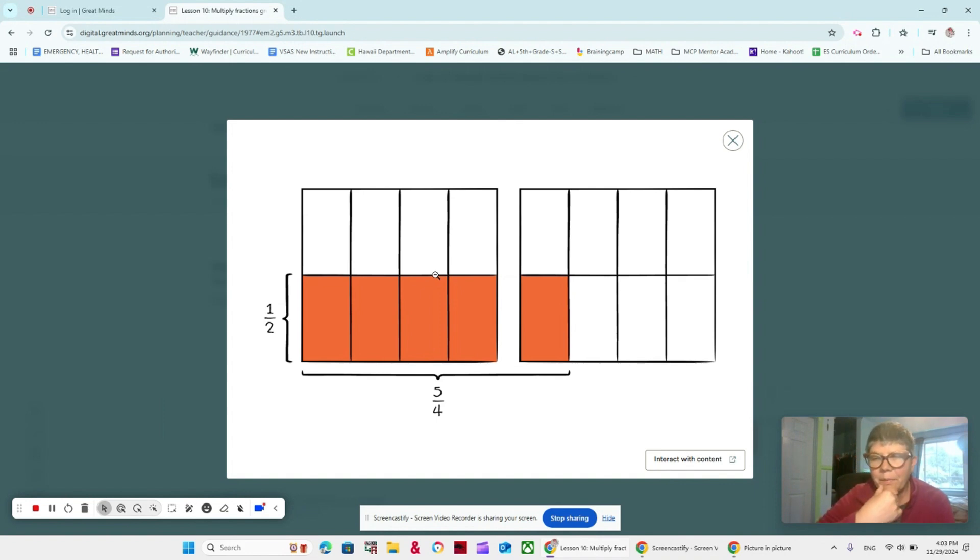This is the model that Leo is using to find 1 half times 5 fourths. We talked about the two squares because we have more than 1. Leo says that 1 half times 5 fourths is equal to 5 sixteenths. Do you agree? Think about that for a minute. Let's write 5 sixteenths here so you can think about that.